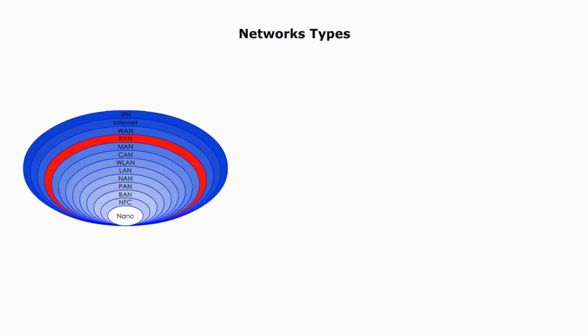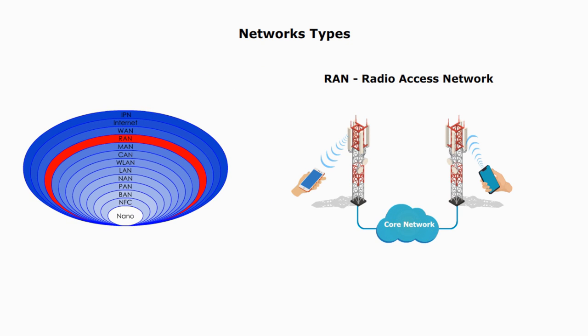RAN, radio access network, is a part of a cellular phone network that connects end-user devices like mobile phones, smartphones, to a core network, is a part of the cellular phone system.